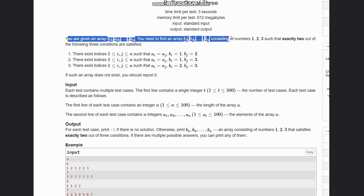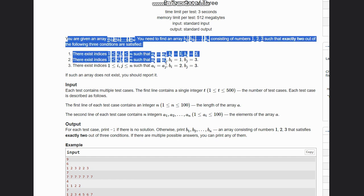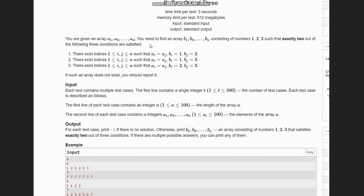find an array b1 to bn consisting of numbers 1, 2, 3 such that exactly two out of the following three conditions are satisfied. There exist indices i ≥ 1 and j ≤ n such that ai = aj, bi = 1, bj = 2.